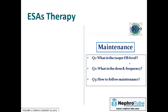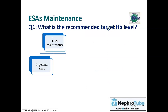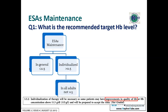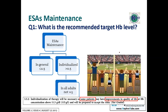Regarding maintenance — what is the target hemoglobin? According to KDIGO, the preferred hemoglobin level is below 11.5, maintaining patients in a slight anemic state. However, individualization may allow higher levels to improve quality of life, but in all adults, do not raise hemoglobin above 13. Higher hemoglobin levels increase the risk of stroke and cardiovascular morbidity and mortality.